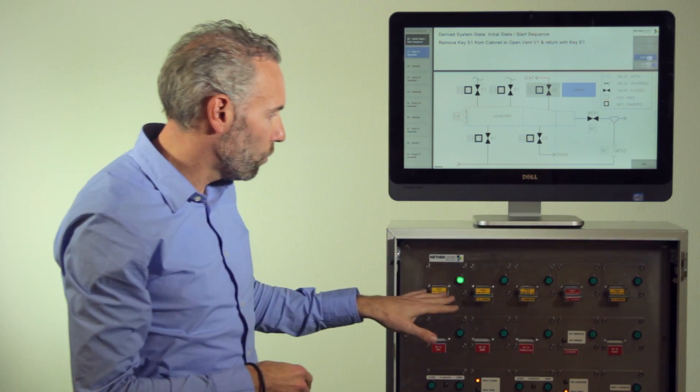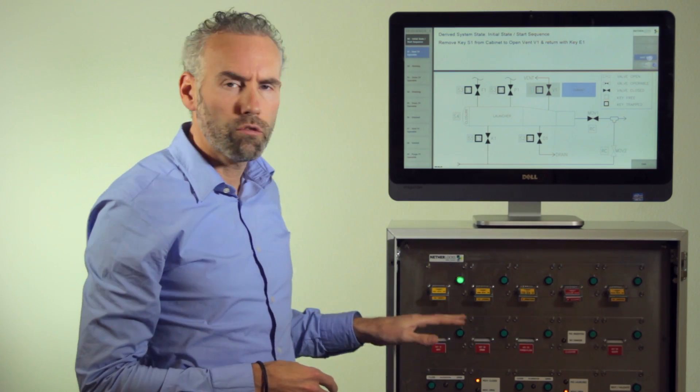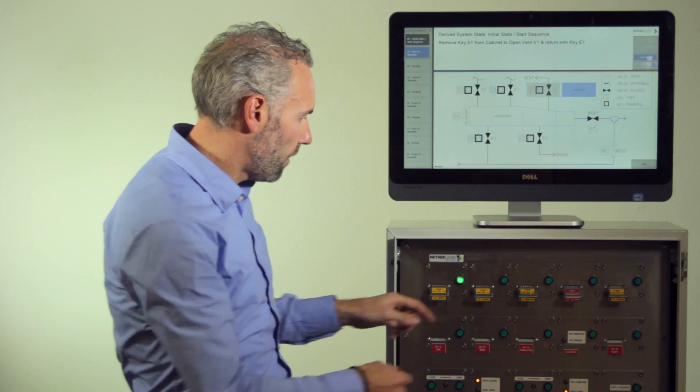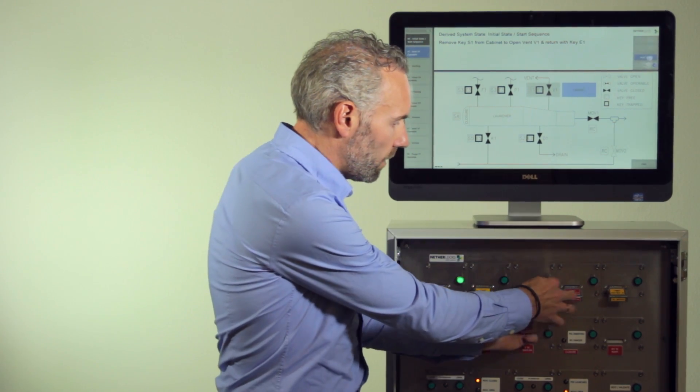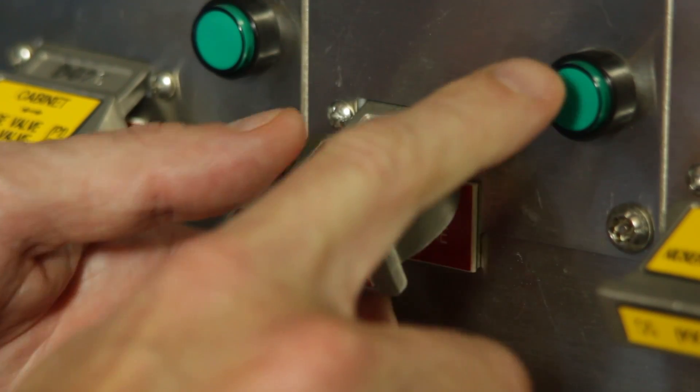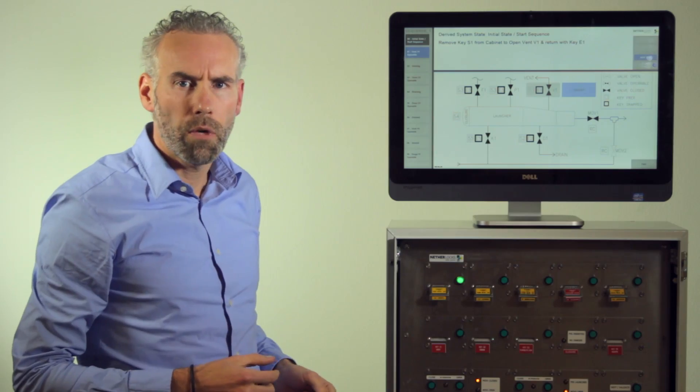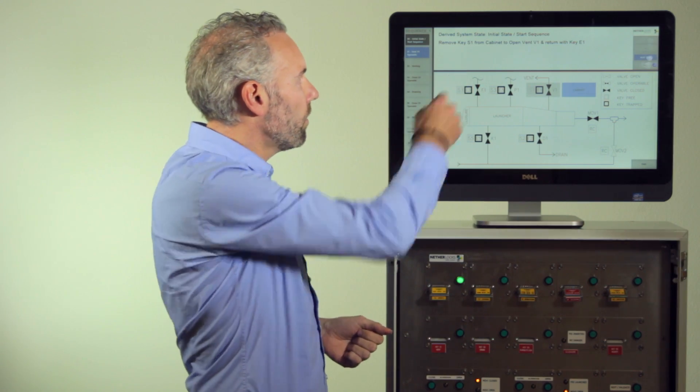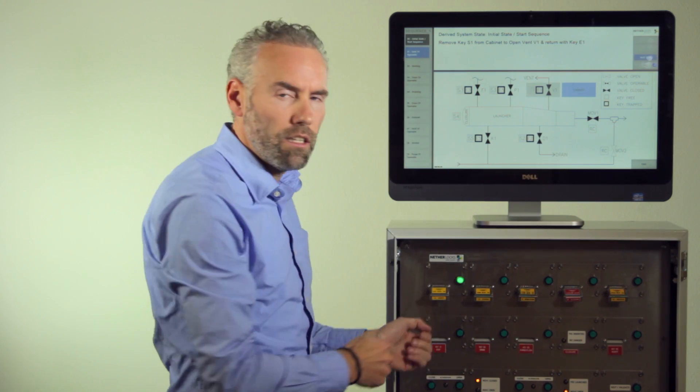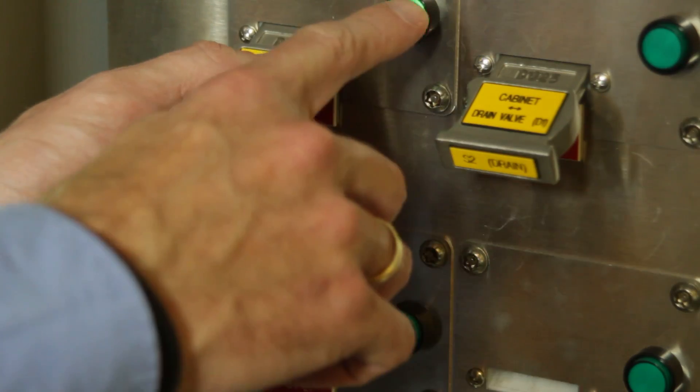As you can see multiple keys are in this cabinet and they are all trapped by solenoids. When I try to release the keys I see they are trapped except for the key that is initiated by the light. So the cabinet tells me key one that I need to take is the key that is free, initiated by this light.